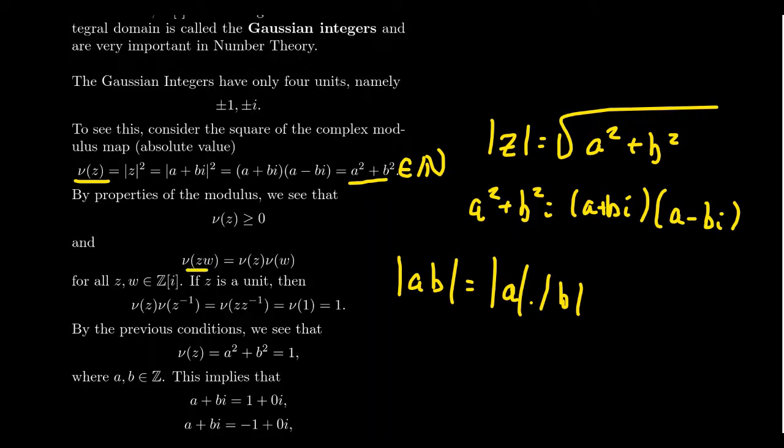This norm very much mimics that, and so I also want to point out to you that if z is a unit, if z is a Gaussian integer with a multiplicative inverse, because of this factorization, the norm of z times the norm of z inverse is the norm of z times z inverse, which is one. The norm of one is itself one.